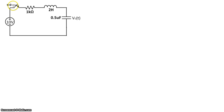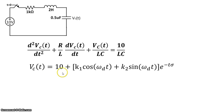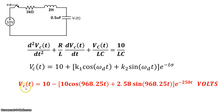In summary, we started with a series RLC circuit where the switch was open and closed at t = 0. The standard second-order differential equation in terms of V_C is d²V/dt² + (R/L) dV/dt + V/LC = 10/LC. Because of the forcing function, the solution had both a particular and homogeneous part. We calculated ζ = 0.25, giving an underdamped response. By applying initial conditions, we found k₁ = −10, k₂ = −2.58, σ = 250, and ωd = 968.25. The final solution is V_C(t) = 10 − (10 cos(968.25t) + 2.58 sin(968.25t)) · e^(−250t) volts.